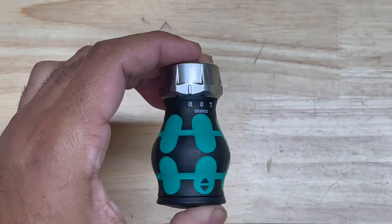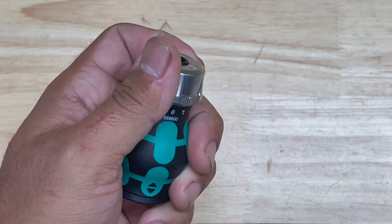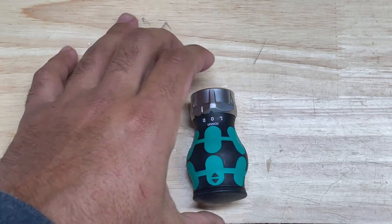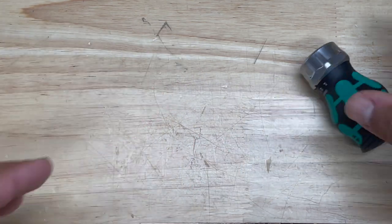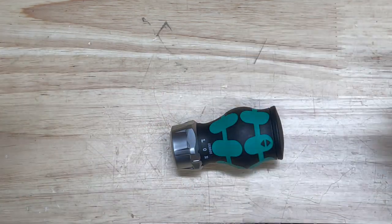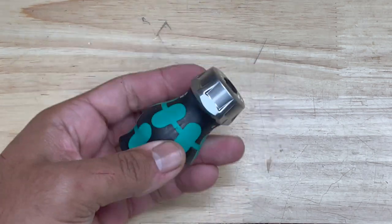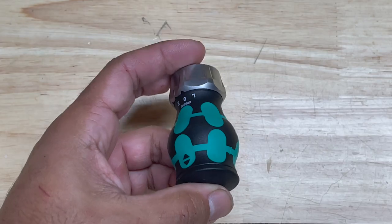This little stubby is really solid and with my stubbies I always generally like to go for a ratcheting stubby over a bit holder stubby and I'll explain why. I'm really excited about this little guy. This thing is super tiny and super awesome.